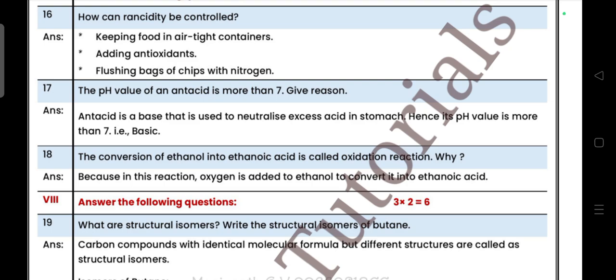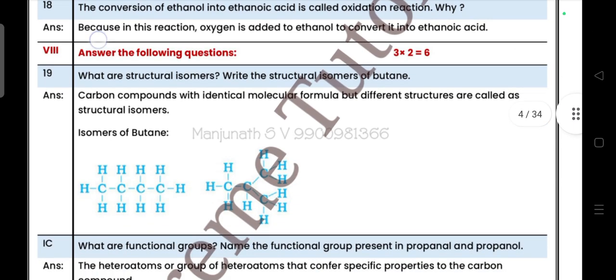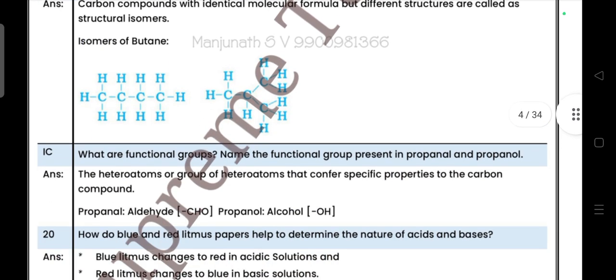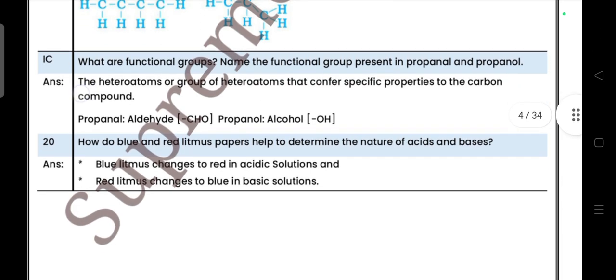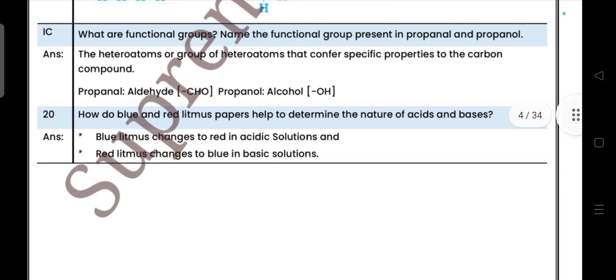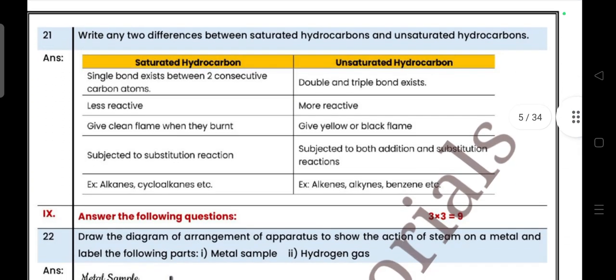Two mark questions. What are the structural isomers? Write the structural isomers of butane. Carbon atoms with identical molecular formula but different structural formula are called structural isomers. These are the isomers of butane and isobutane. What are the functional groups? Name the functional group present in the propanol and propanal. The hetero atoms or group of hetero atoms that confer specific properties to carbon compound. Propanal is aldehyde, propanol is alcohol. How do blue and red litmus paper help to determine the nature of acid and bases? Blue litmus changes to red in acid, red litmus paper changes to blue in base. What is the difference between saturated hydrocarbons and unsaturated hydrocarbons?